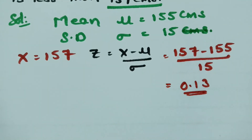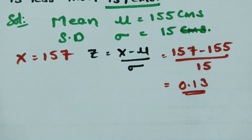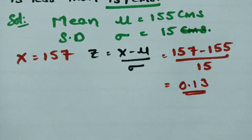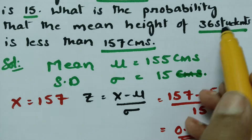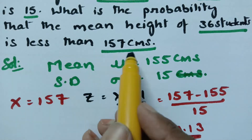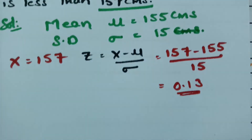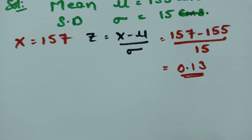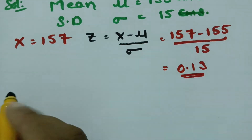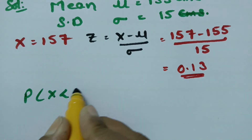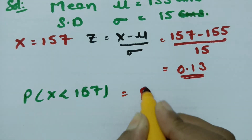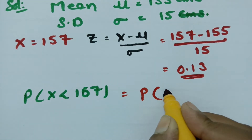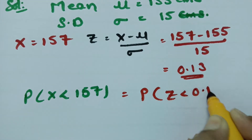Now what do we have to find? We have to find the probability that the mean height of 36 students is less than 157. So we have to find the less-than value — that is, probability of x less than 157. In terms of z, this will be the probability of z less than 0.13.